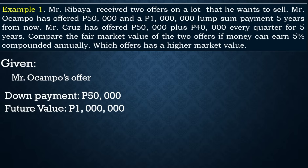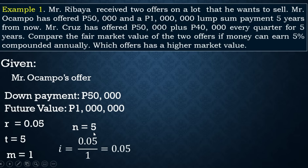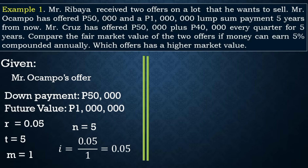For Mr. Ocampo's offer, the down payment is 50,000 and the future value is one million after five years. The nominal rate is 5%, which in decimal form is 0.05. The term is five years and the frequency of conversion is 1 since it is compounded annually. Therefore, n = m × t = 1 × 5 = 5, and i = r/m = 0.05 / 1 = 0.05.